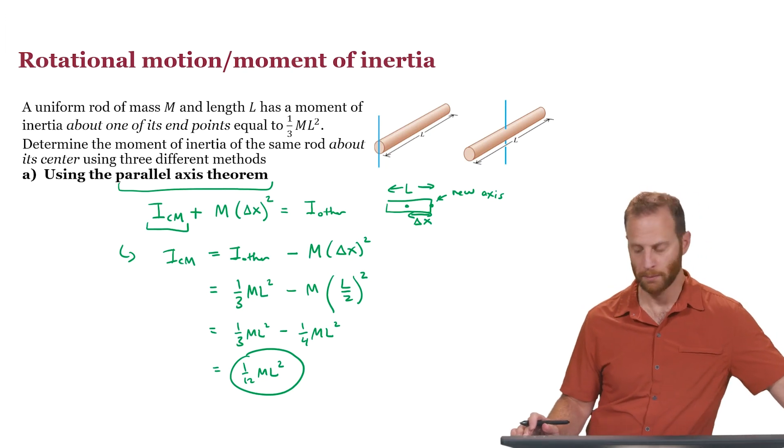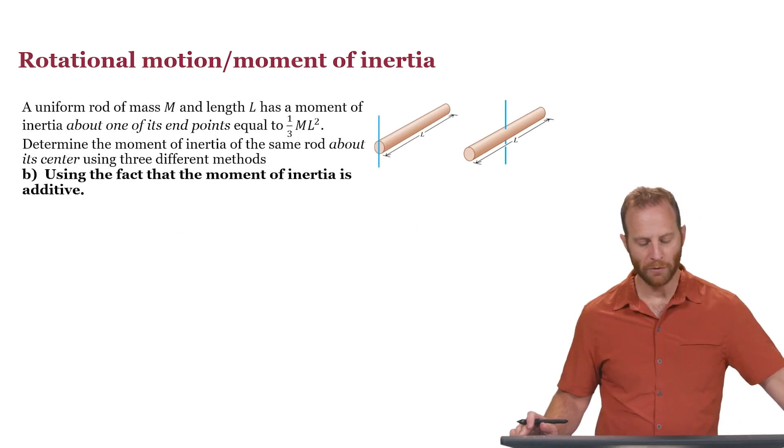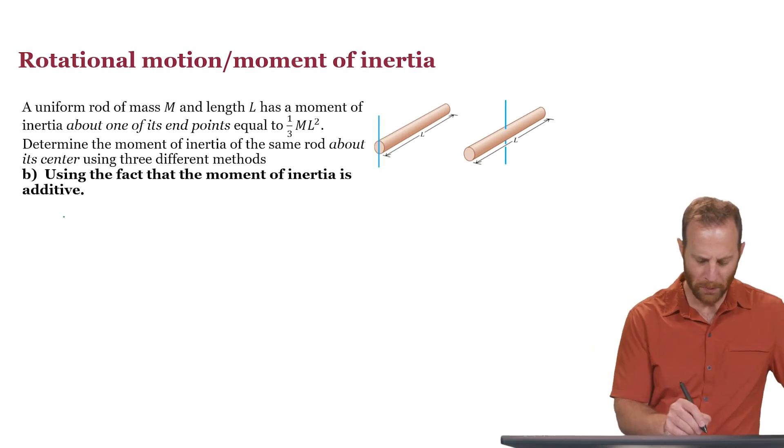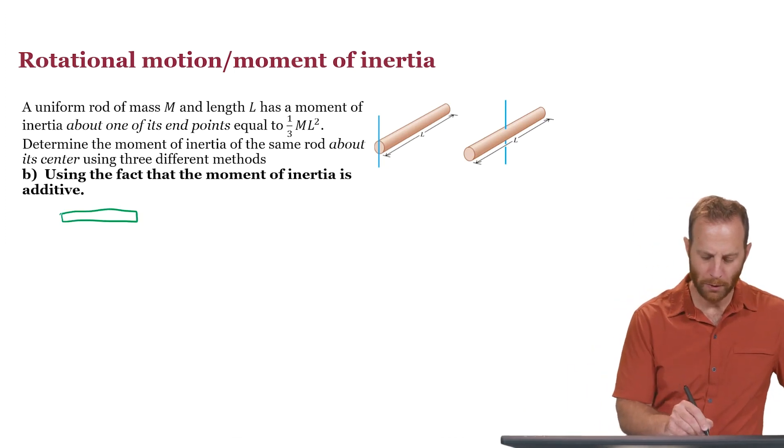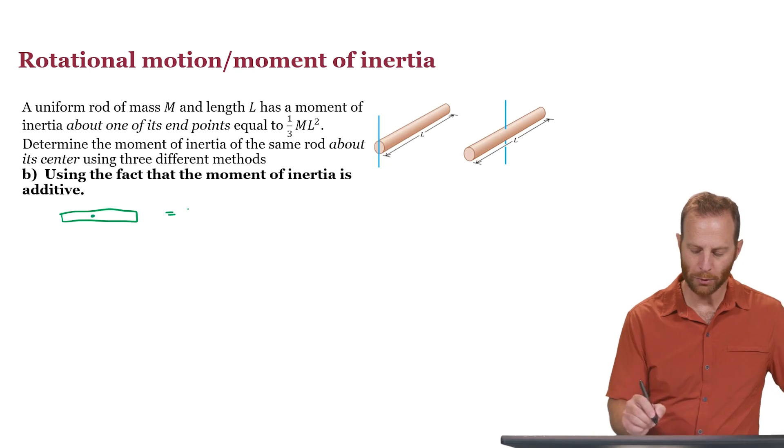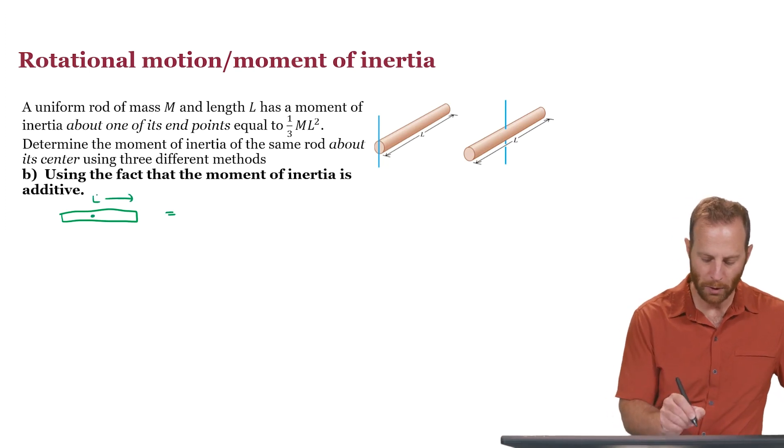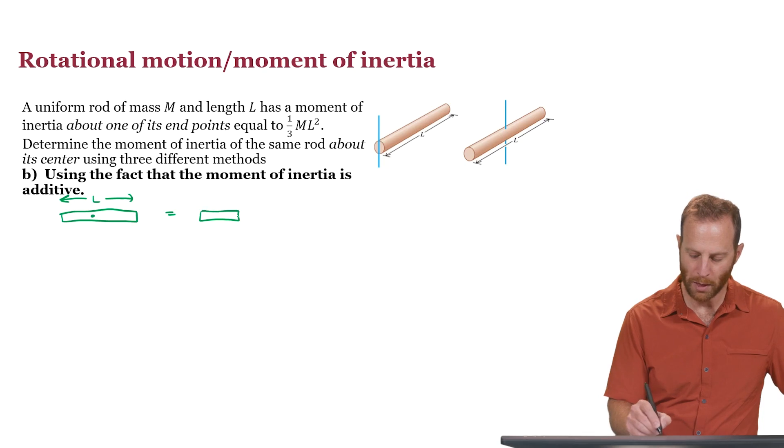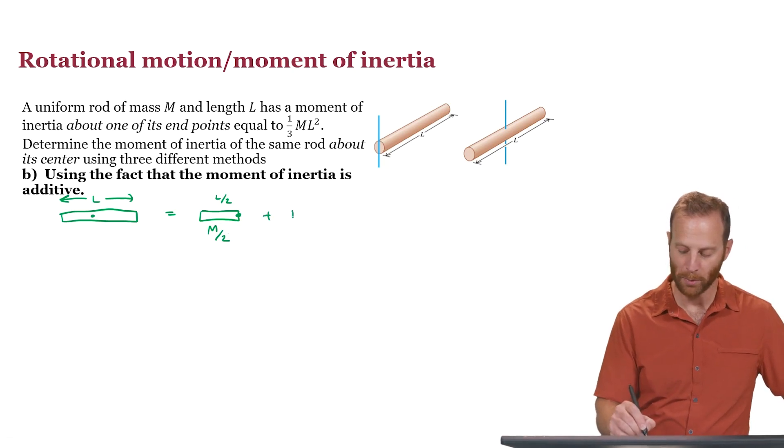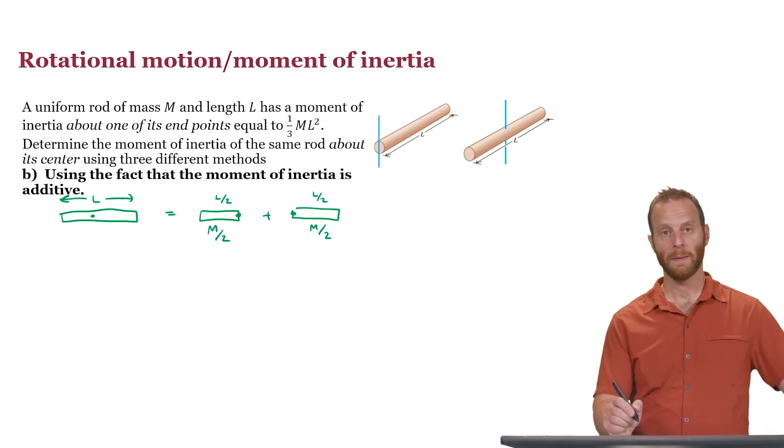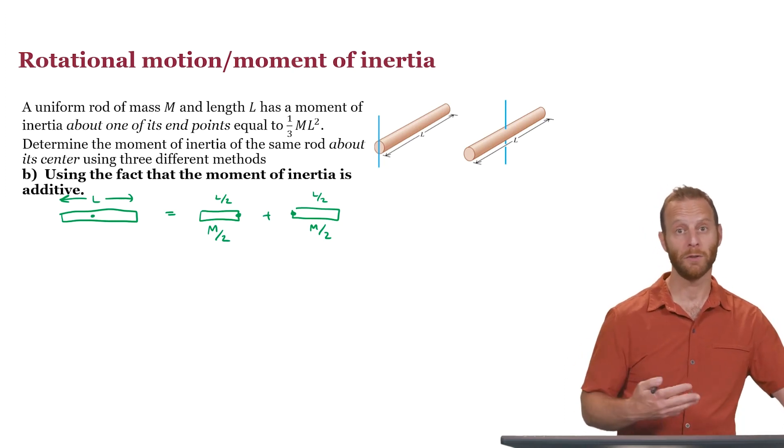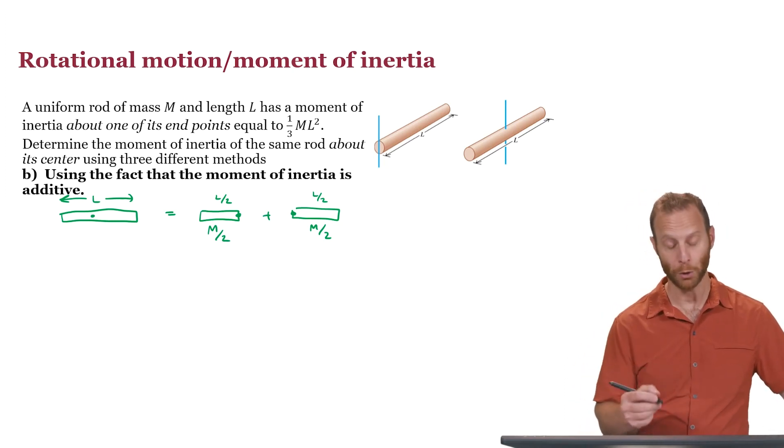We can do this a different way, however. So use the fact that the moment of inertia is additive. In other words, we can think of the moment of inertia for this rod about its center. That's equal to the moment of inertia of one rod which is rotated about its end. That rod will have a length of l over 2 and a mass of m over 2, and add to that a moment of inertia of another rod, also length l over 2, also mass m over 2, rotating around its end. And we already have a formula for the moment of inertia of a rod about its end, so we should be able to do this.